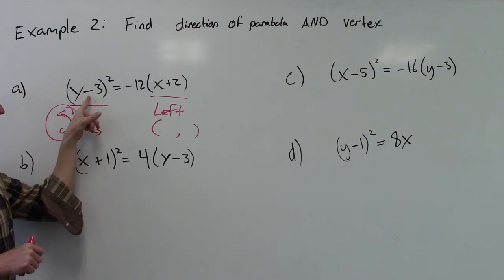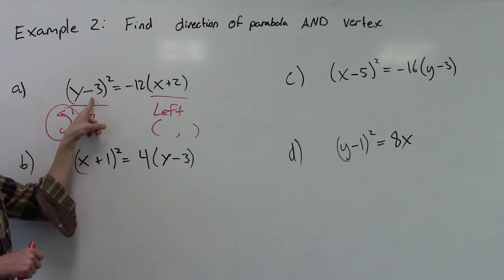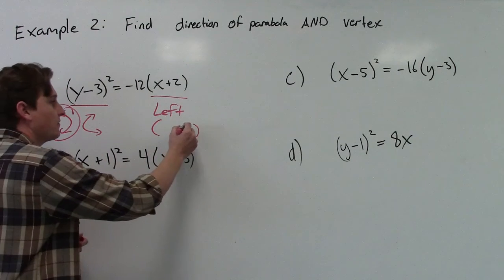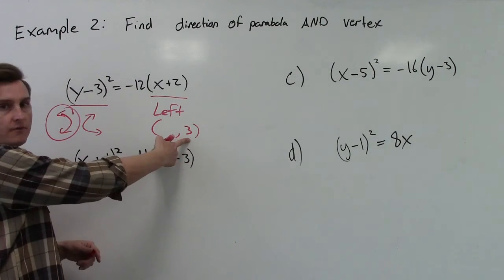So this right here, this minus 3, this is the k part. This is the y-coordinate of your vertex. So what we want to do is say since we're looking at y here, we want to have a positive 3 in the y-spot of our vertex.